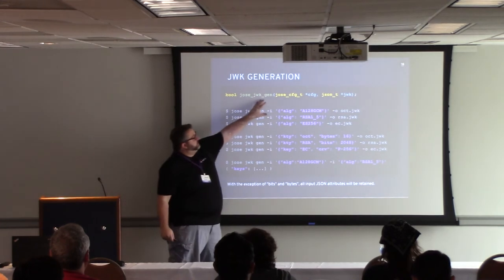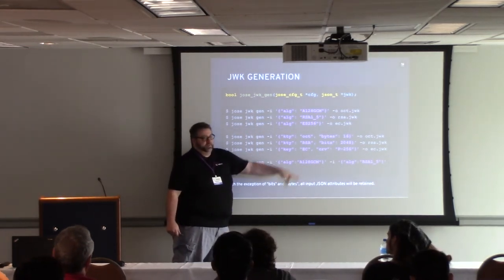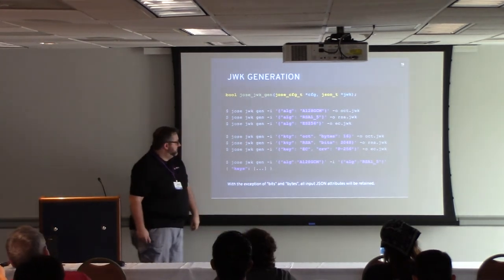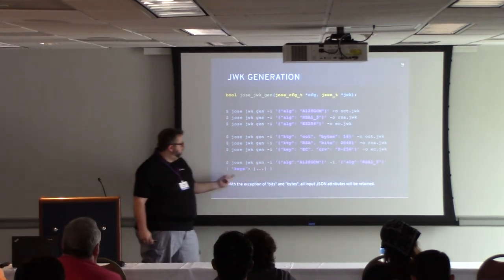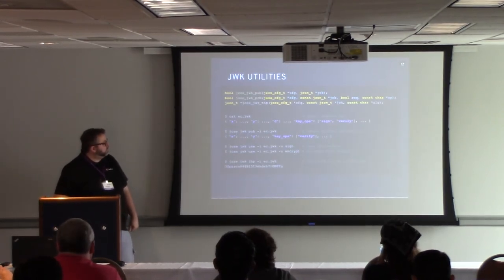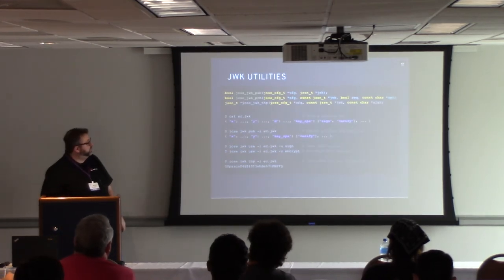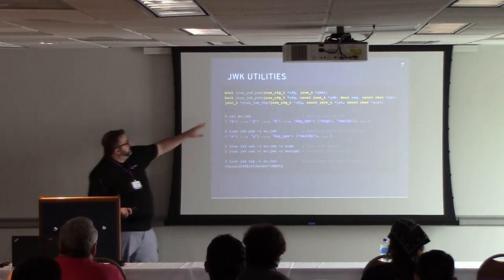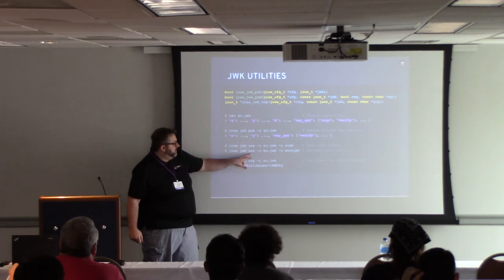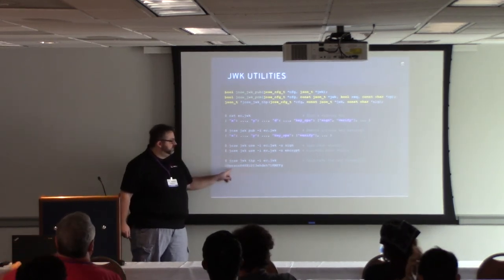We have a function called joseJWKGen. It takes a configuration object, which can be null, and any JWK template you want — just tell it what algorithm you want the key for, and it generates the key. You can also specify things like wanting 16 bytes without specifying an algorithm. If you specify multiple templates, we output a key set. Anything you put in the template that we don't know about, we leave in place. We also have JWK utilities: pub removes all private key material, use indicates whether the key can be used for signatures or encryption, and we can generate a thumbprint from the public key material.